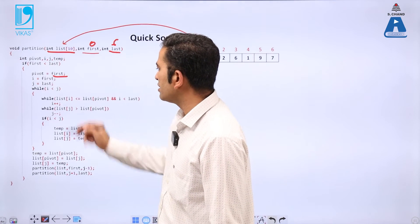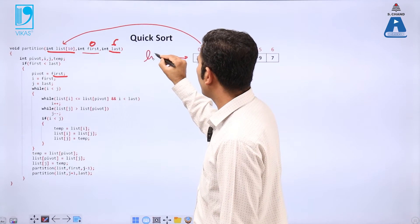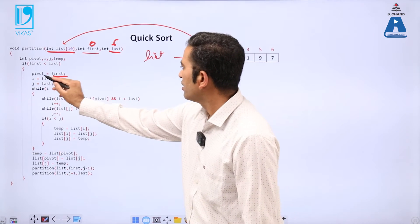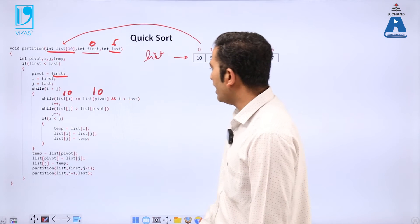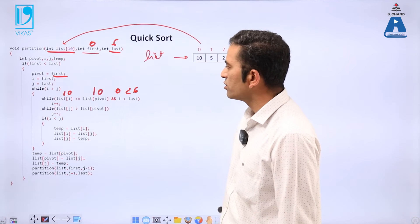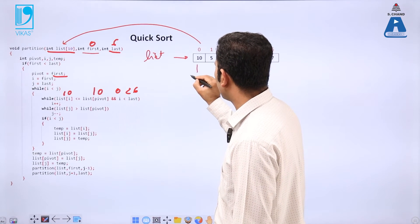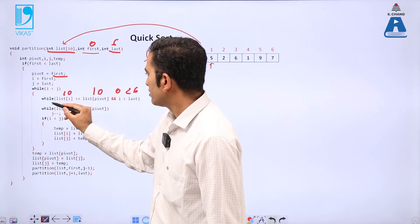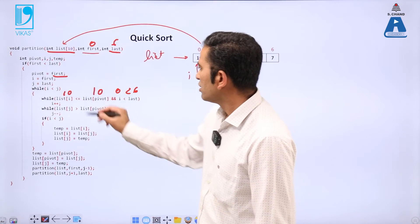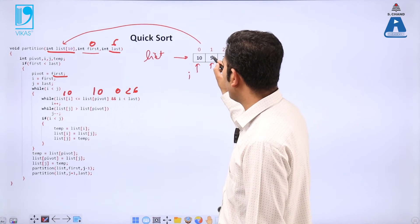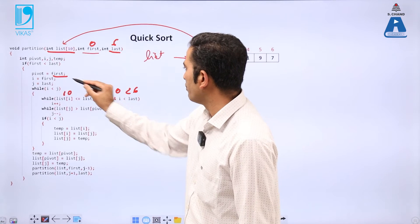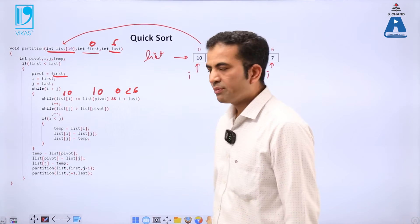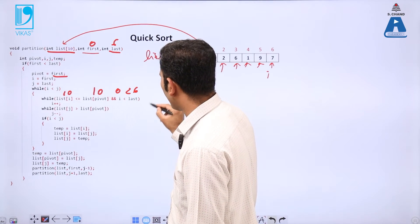While i is less than j — meaning 0 is less than 6 — we check: list[i] (which is list[0] = 10) is less than or equal to list[pivot] (which is 10) and i is less than or equal to last — condition is true, so i increments. This continues: list[1] = 5 is less than or equal to pivot 10, so i increments again, and so on until the condition becomes false.